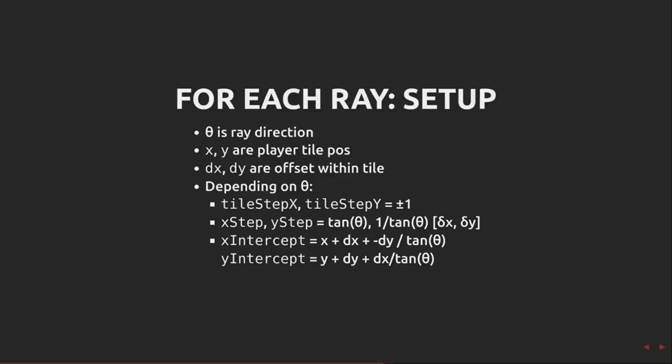Finally, we find the first point of intersection, x-intercept and y-intercept. These are the current x-tile position, plus the fractional amount within the tile, dx, plus minus dy over tan theta, to find the x position at which the first horizontal grid line intersection occurs.